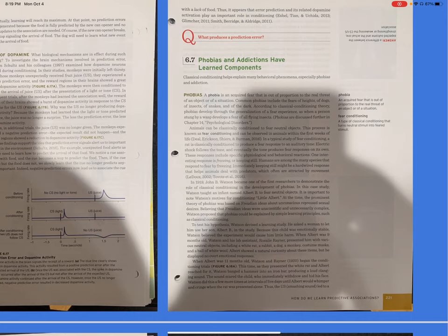Animals can be classically conditioned to fear neutral objects. This process is known as fear conditioning and can be observed in animals within the first weeks of life. In a typical study of fear conditioning, a rat is classically conditioned to produce a fear response to an auditory noise. Electric shock follows a tone, and eventually the tone produces fear responses on its own. These responses include specific physiological and behavioral reactions. One interesting response is freezing, or keeping still. Humans are among the many species that respond to fear by freezing. Immediately keeping still might be a hard-wired response that helps animals deal with predators, which often are attracted by movement.